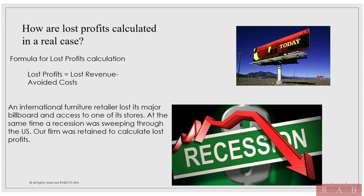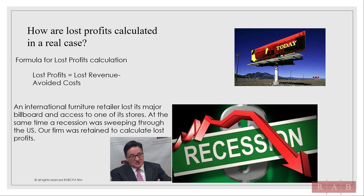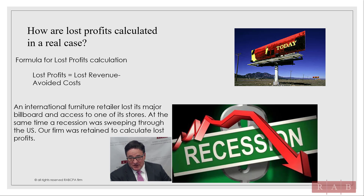The sign expert had formulas showing that with this kind of traffic, you can expect this many people to pull off the highway, and of those, this many will buy furniture. We both had to testify under depositions to prove that the sign resulted in this amount of lost sales. We also had to go in and look at the recession — this was the portion of sales lost because of the recession. We did a lot of calculations, went through a couple of depositions, and this actually ended up settling out of court.